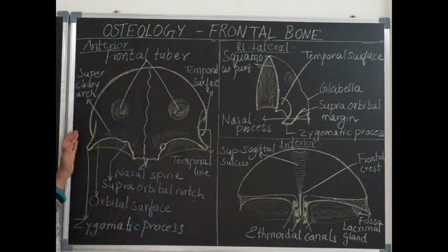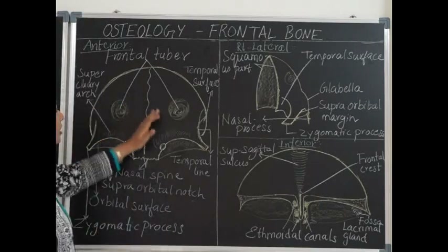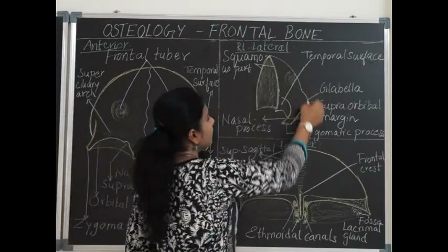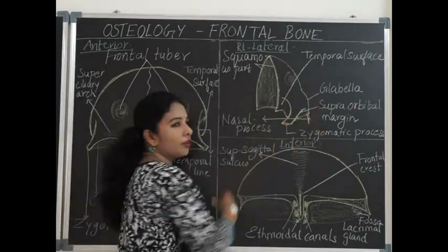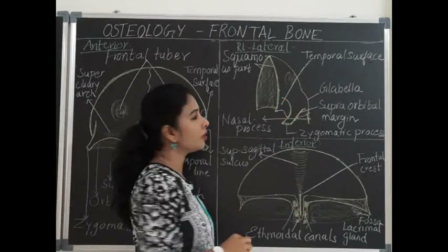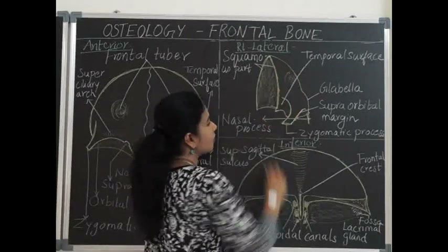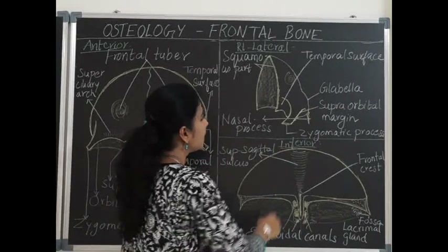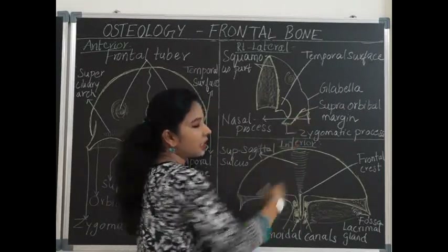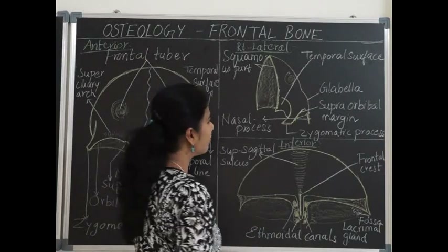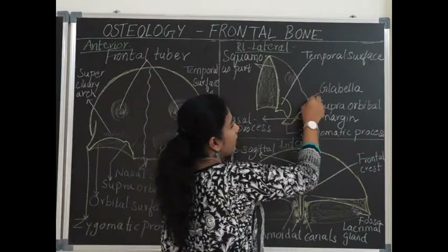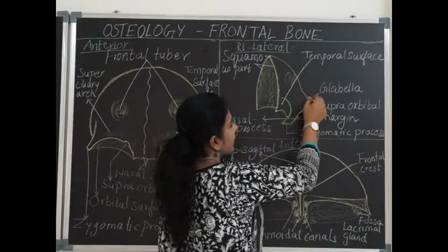Here is the lateral surface of the frontal bone, showing the squamous thin plate, which is the squamous part of the frontal bone. Laterally, we can appreciate the zygomatic process articulating with the frontal process of the zygomatic bone, and the glabella, the prominence in the midline, is also visible here.